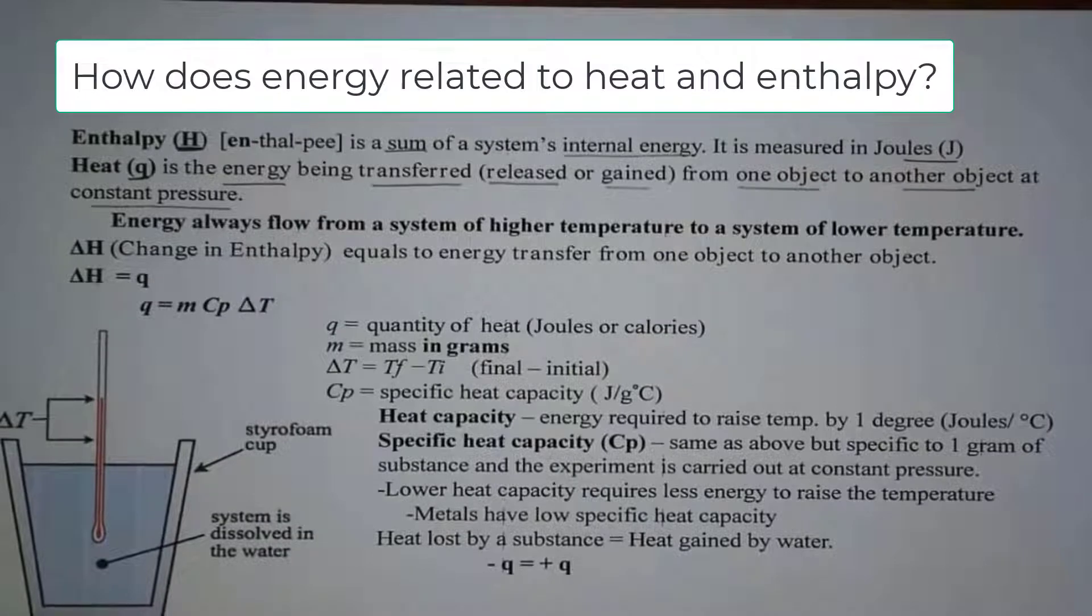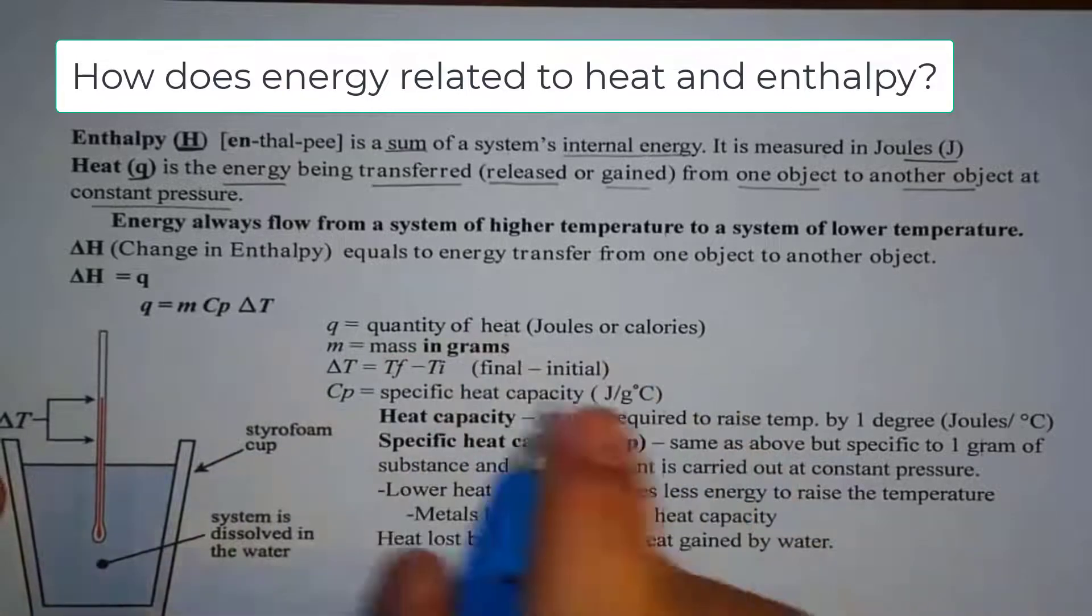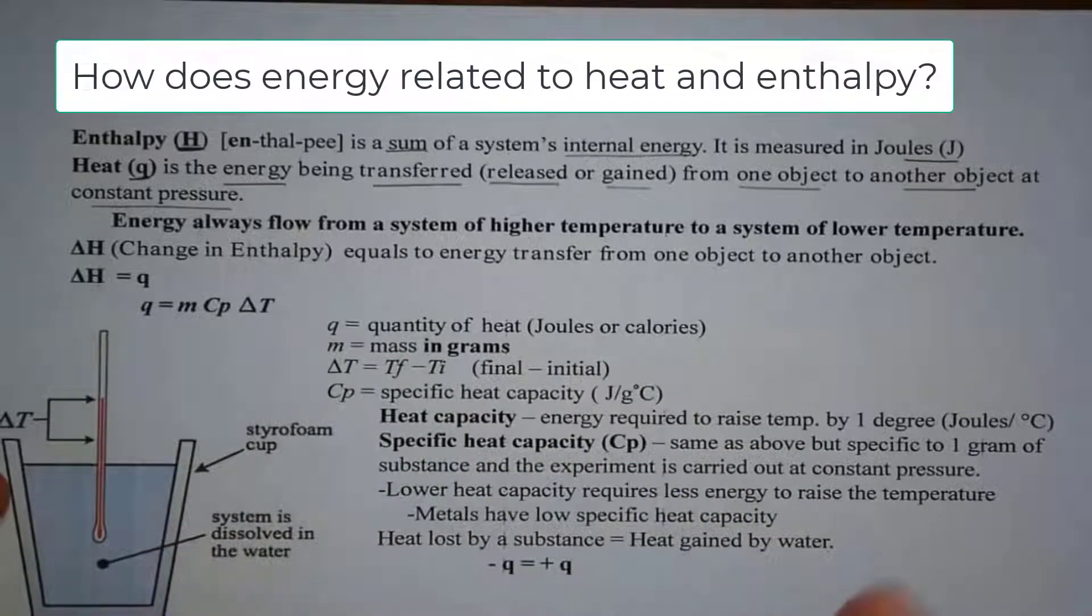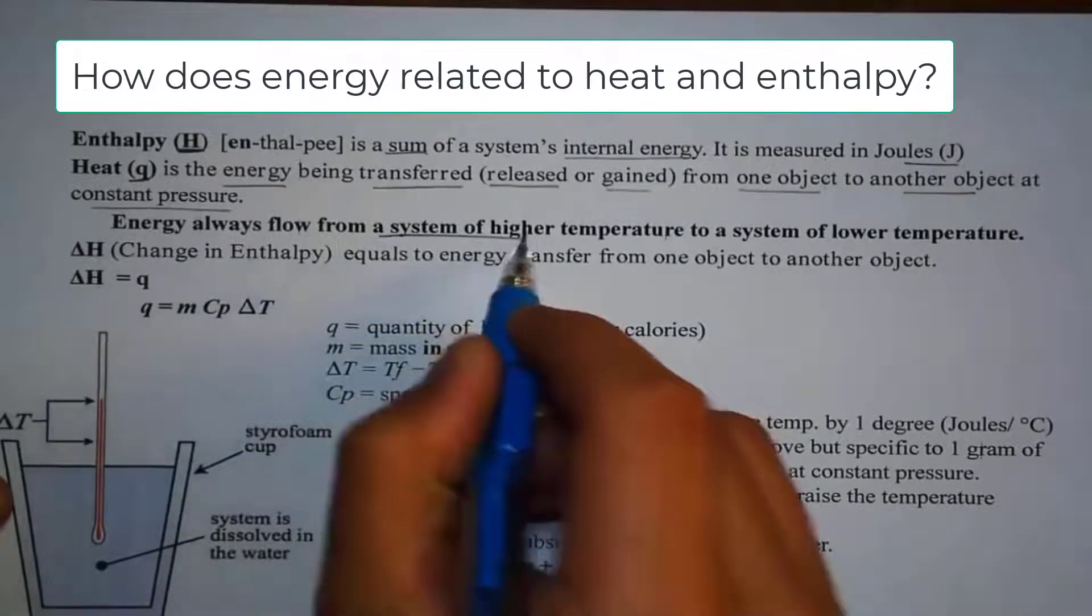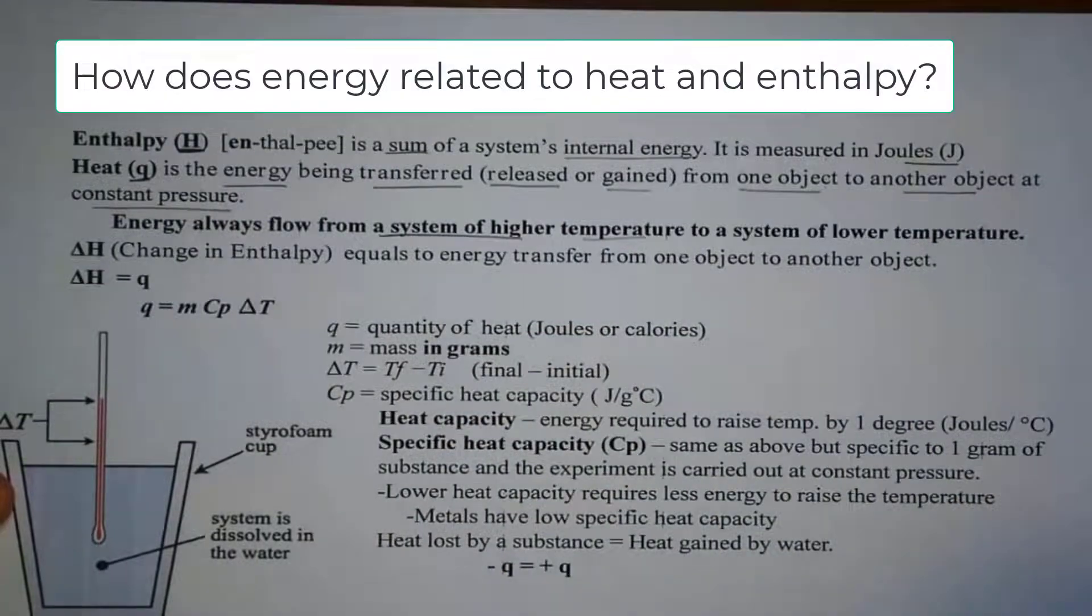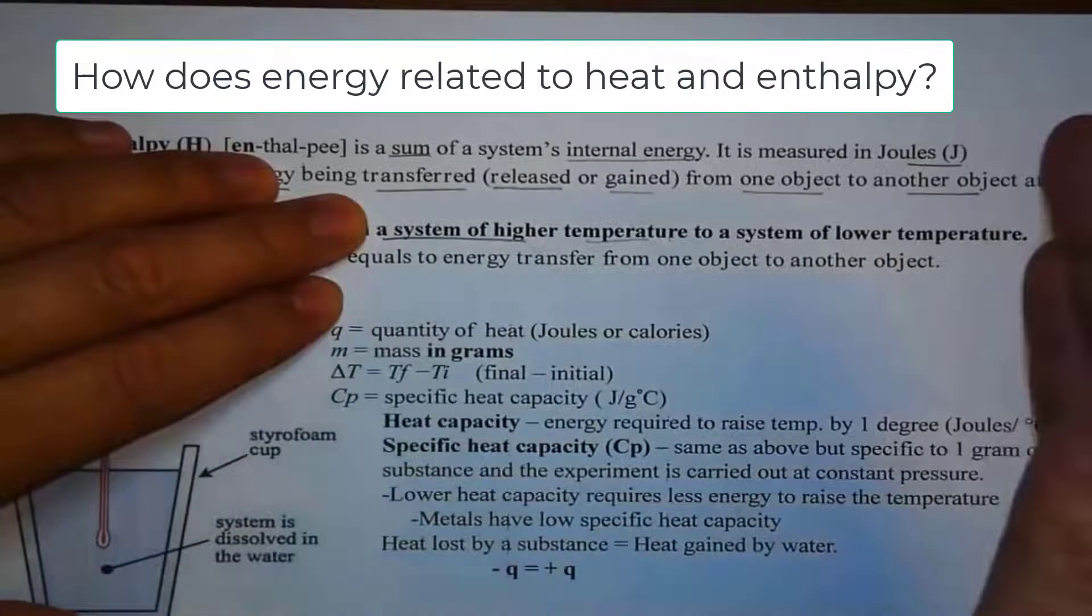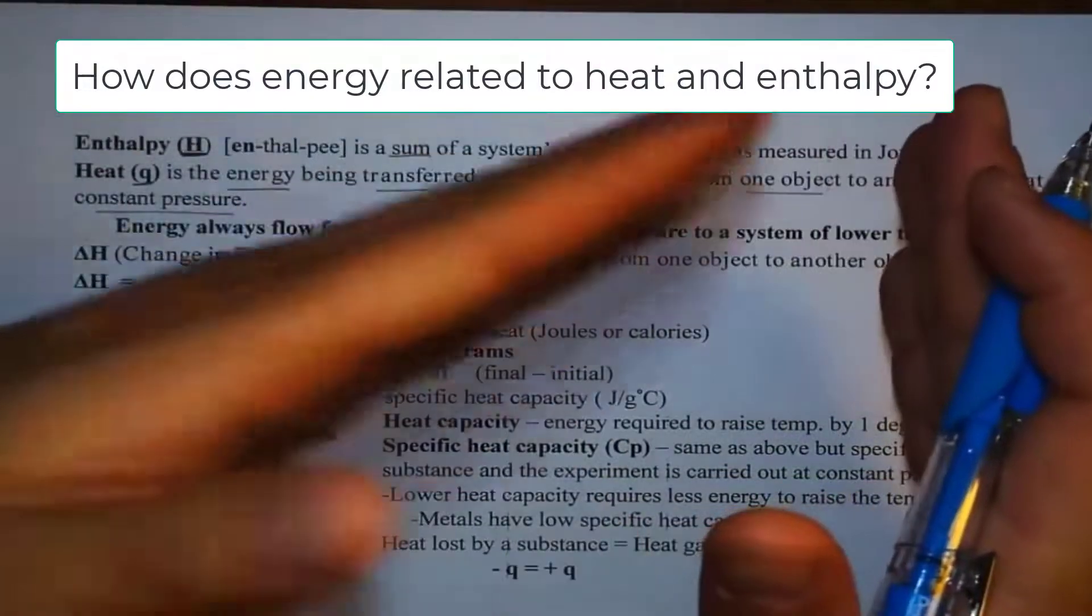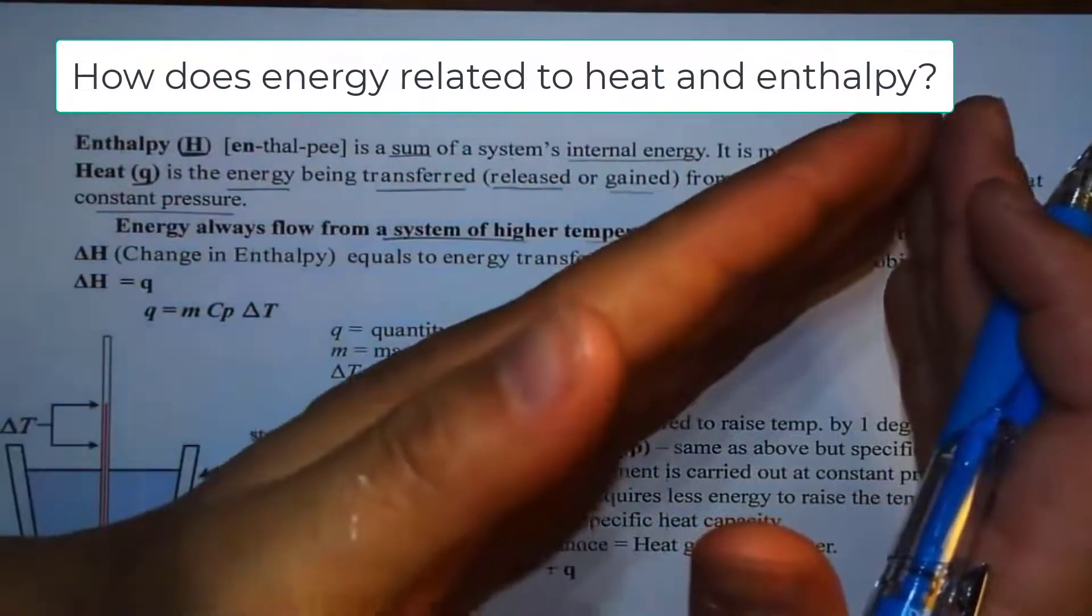So, one thing we need to keep in mind is that energy, naturally, will always flow from one place to another place. Specifically, it will always flow from a system of higher temperature to a system of lower temperature. Basically, saying that if you have a hot object in contact with a cold object, that energy in the hot object will go to the cold object.